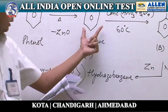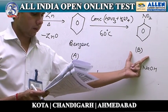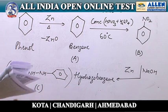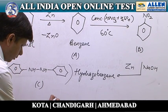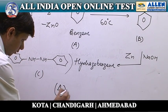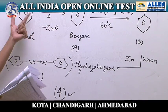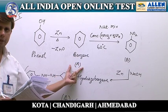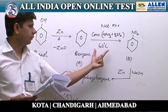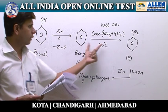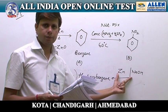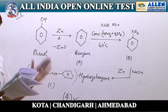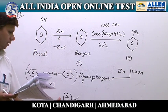Overall: product A is benzene, product B is nitrobenzene, and product C is hydrazobenzene. According to this sequence of products, the correct answer is the fourth option.